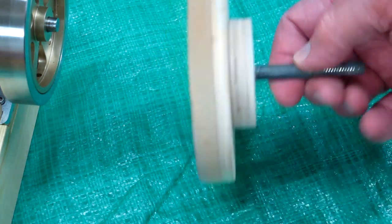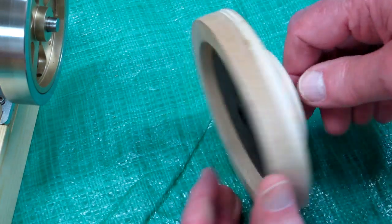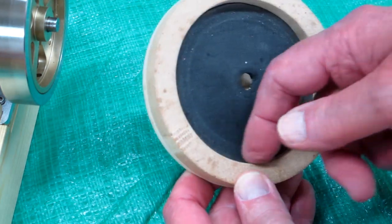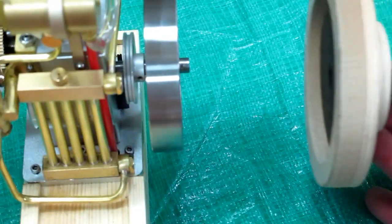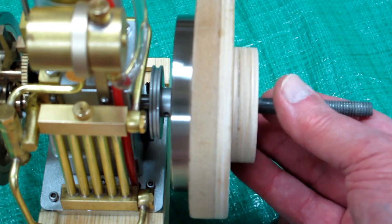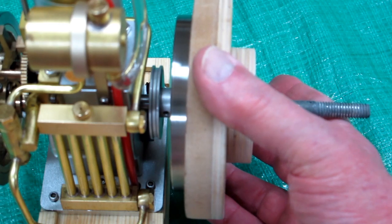When that is all set up, chuck this up in a lathe, and turn this to an accurate outside diameter. Turn this inside diameter to where it just goes on that flywheel. It's a nice fit, but it's not tight. It just jiggles a little bit.